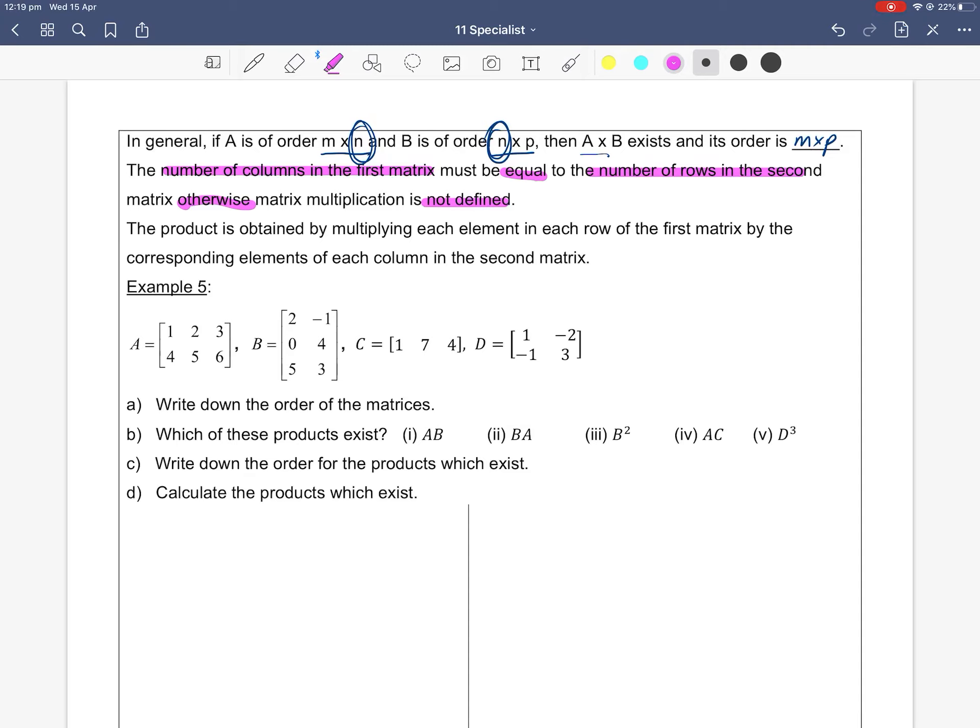So here, again, it's saying in words: the product is obtained by multiplying each element in each row of the first matrix by the elements of each column in the second matrix. Row by column. And we'll look at a bit more in detail with example five.